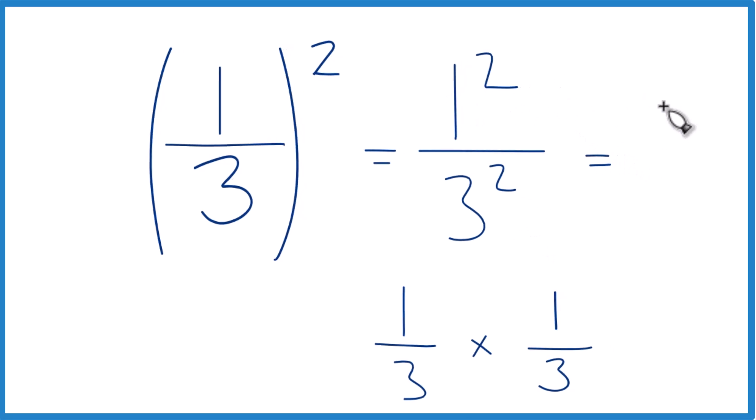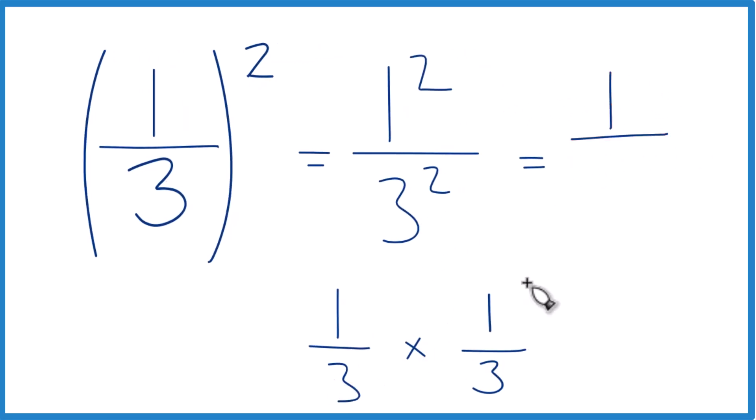So one times one is just one, and three times three is nine. So one-third squared, or one-third to the second power, that equals one-ninth.